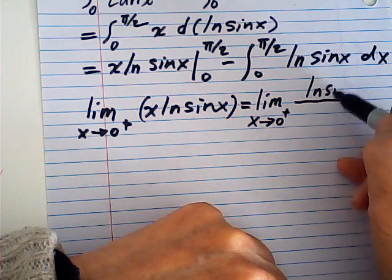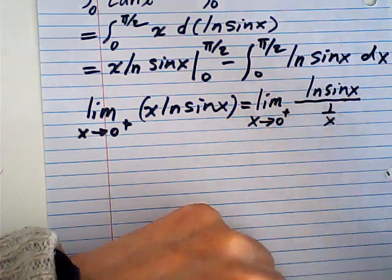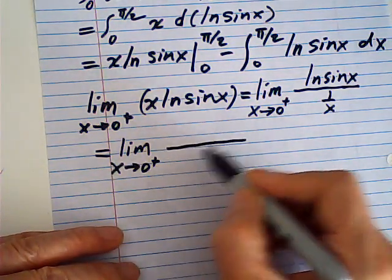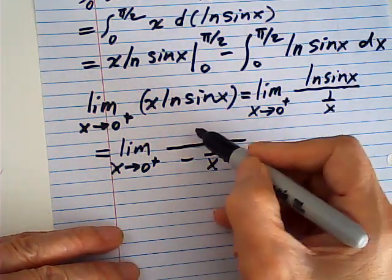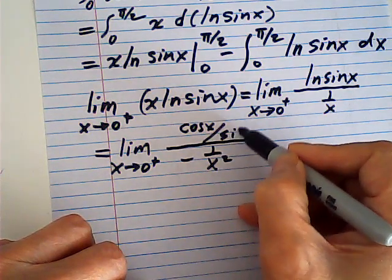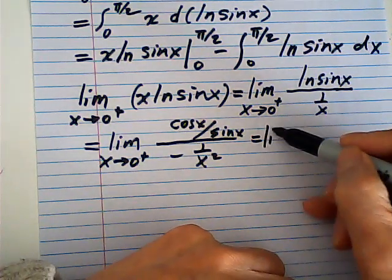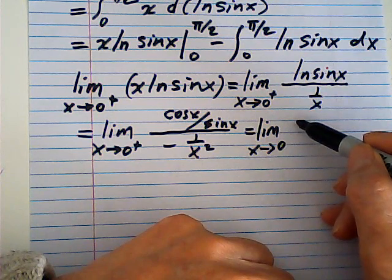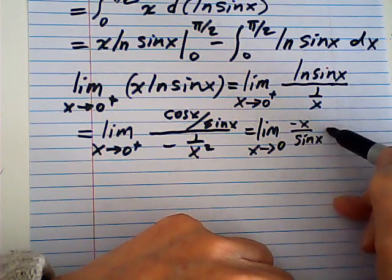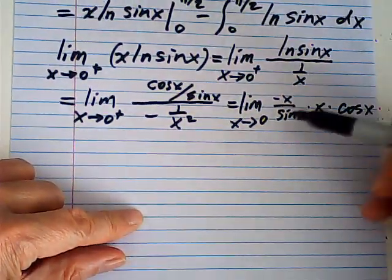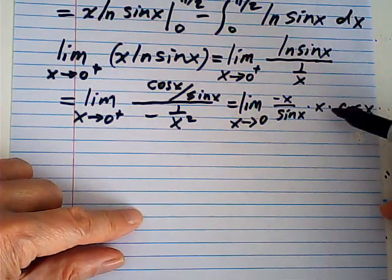I write this as log(sin x) over (1/x). The limit as x approaches 0 from the right: differentiating, the numerator gives cotangent, which is cosine over sine, and the denominator gives -1/x². So this becomes the limit of negative x over sin(x) times x times cos(x). We know x/sin(x) → 1 (the famous limit), and cos(0) = 1, so the result is 0. That means this boundary term is 0.